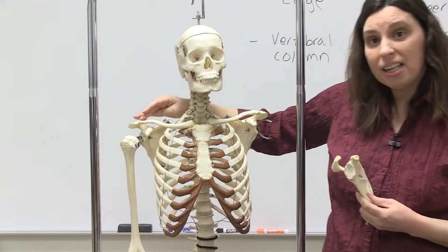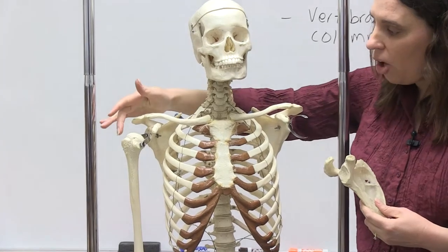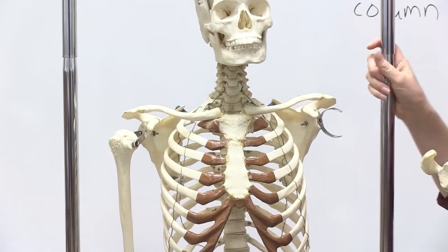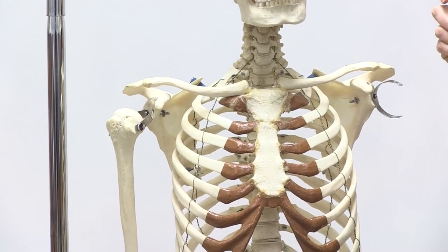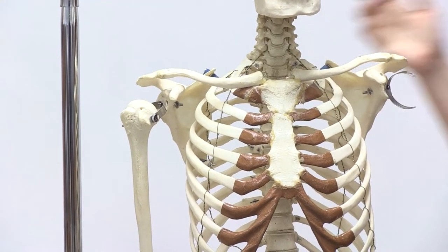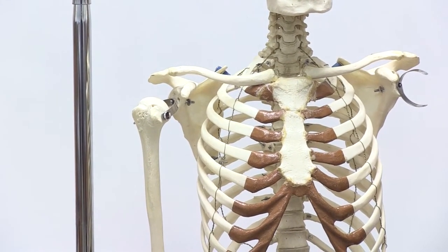It connects with the clavicle, but it also is going to connect with the bone of the arm, which is essentially called the humerus. And in fact, this is actually one part of what we will call the shoulder joint.